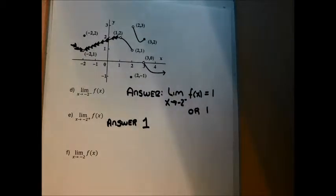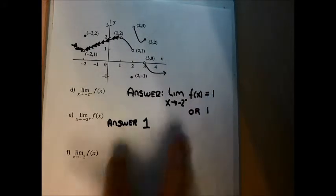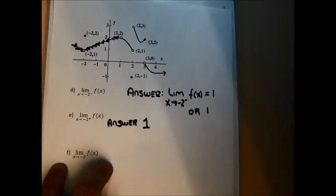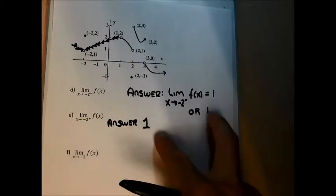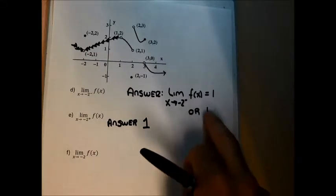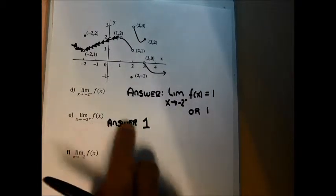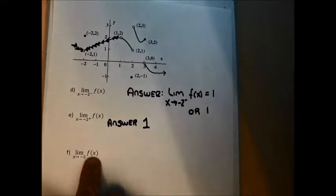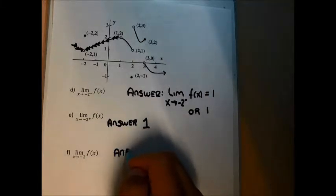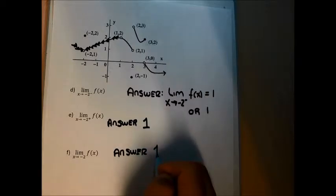The right-hand limit as x approaches -2 is also positive 1. For part F, if the left-hand limit and the right-hand limit are the same number, that's the two-sided limit. If they were different, the limit doesn't exist. Here, approaching -2 from the left we got 1, and from the right we got 1, so the two-sided limit is 1. My answer to part F: the limit as x approaches -2 is positive 1.